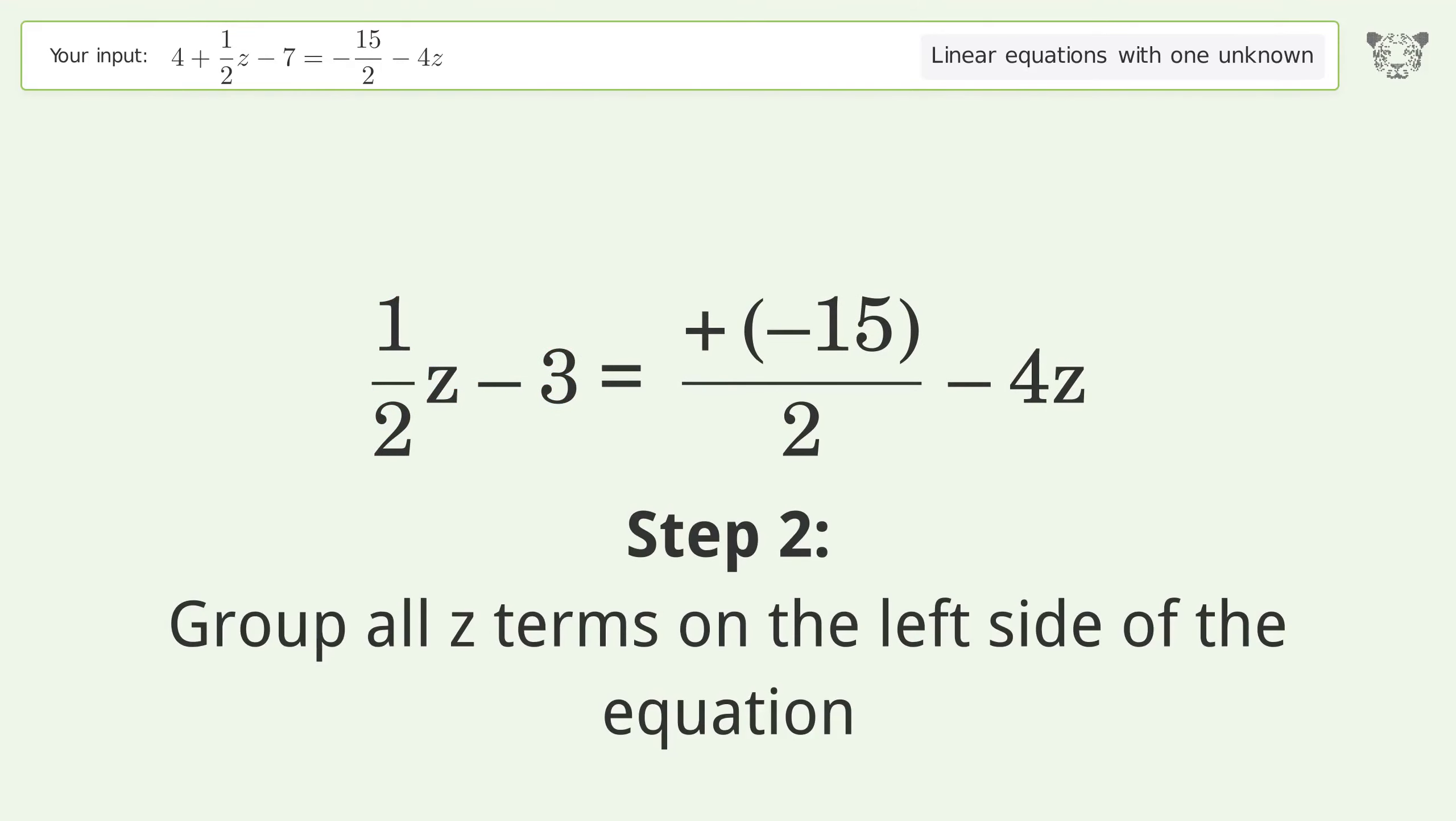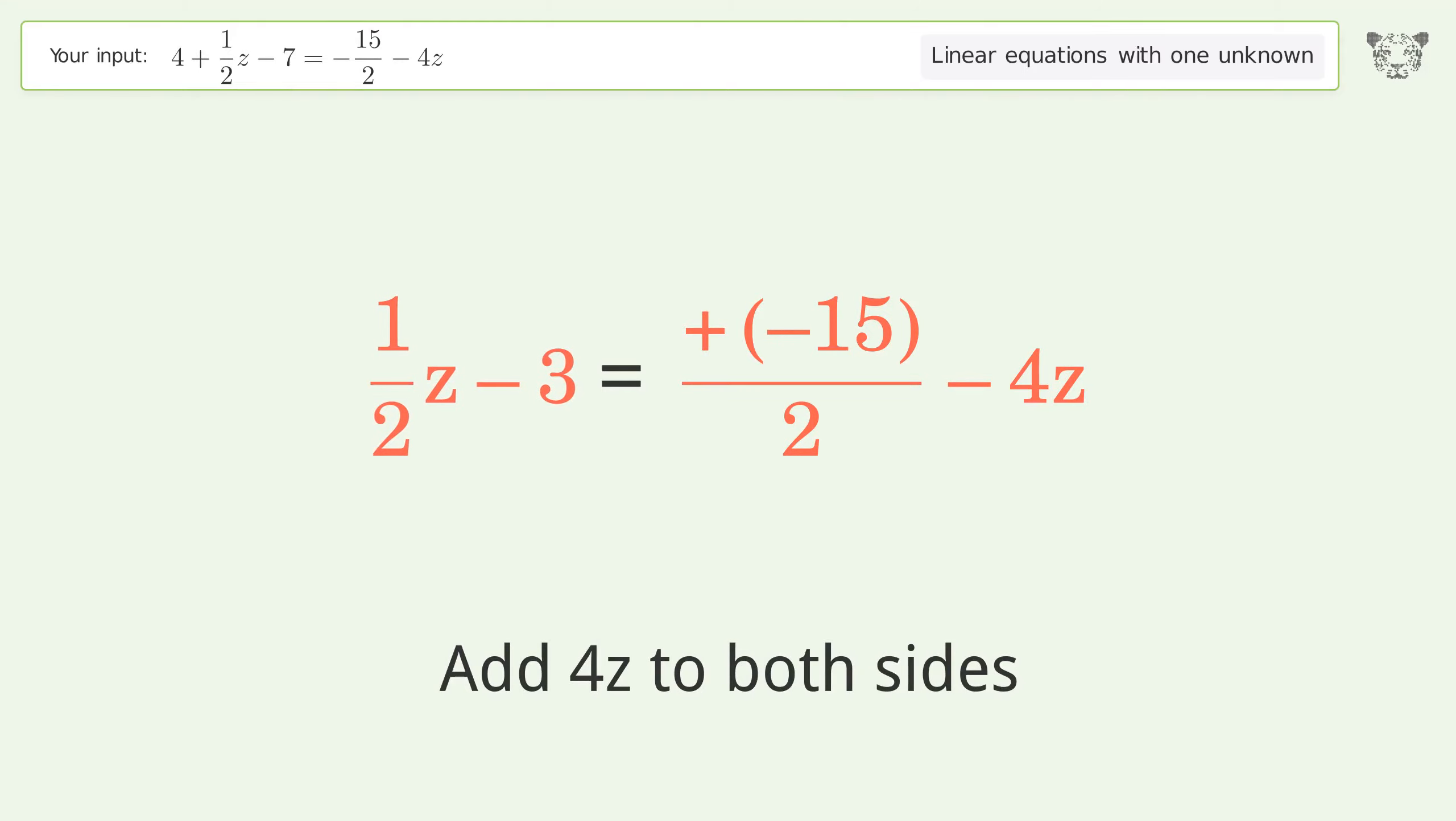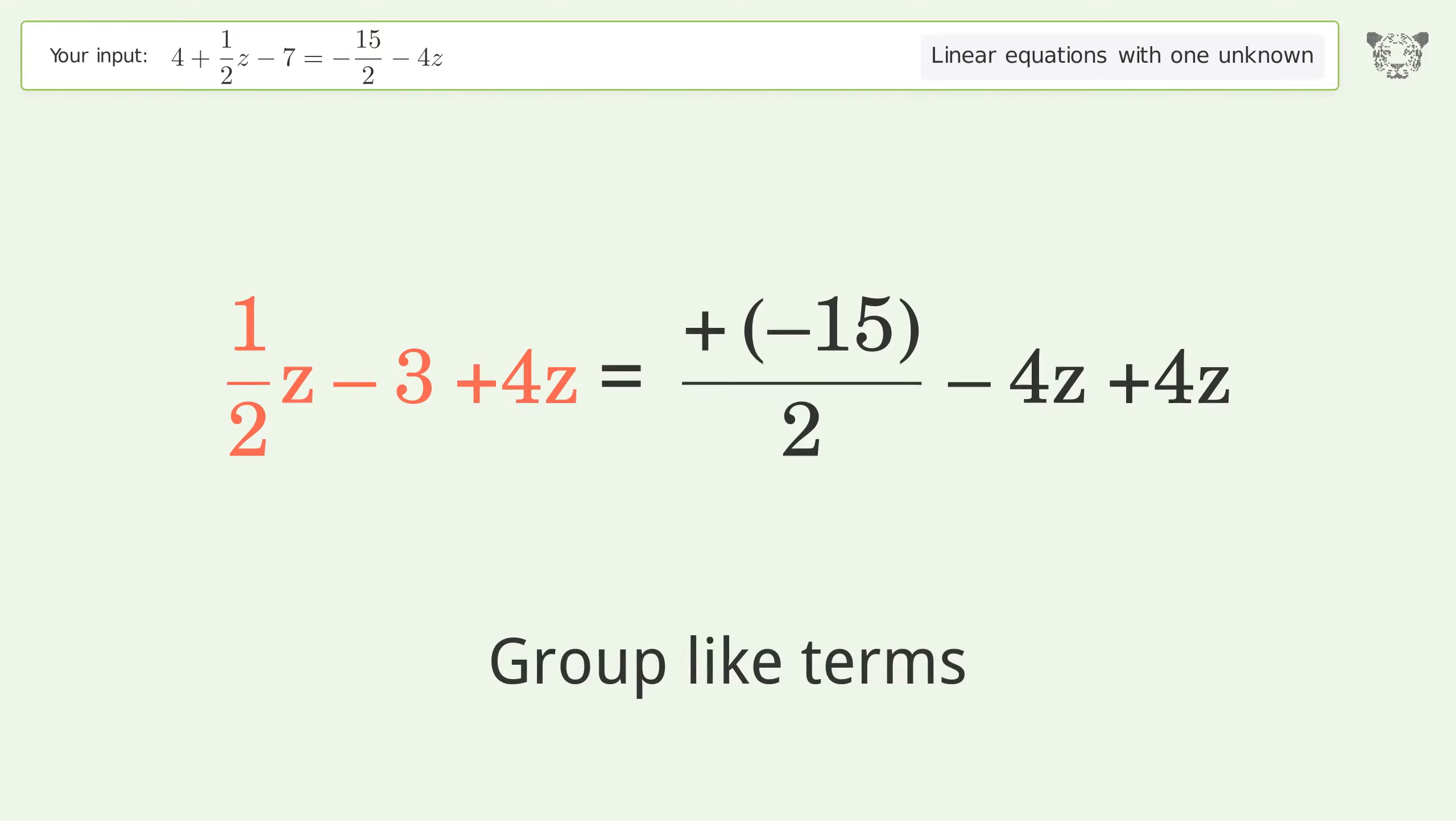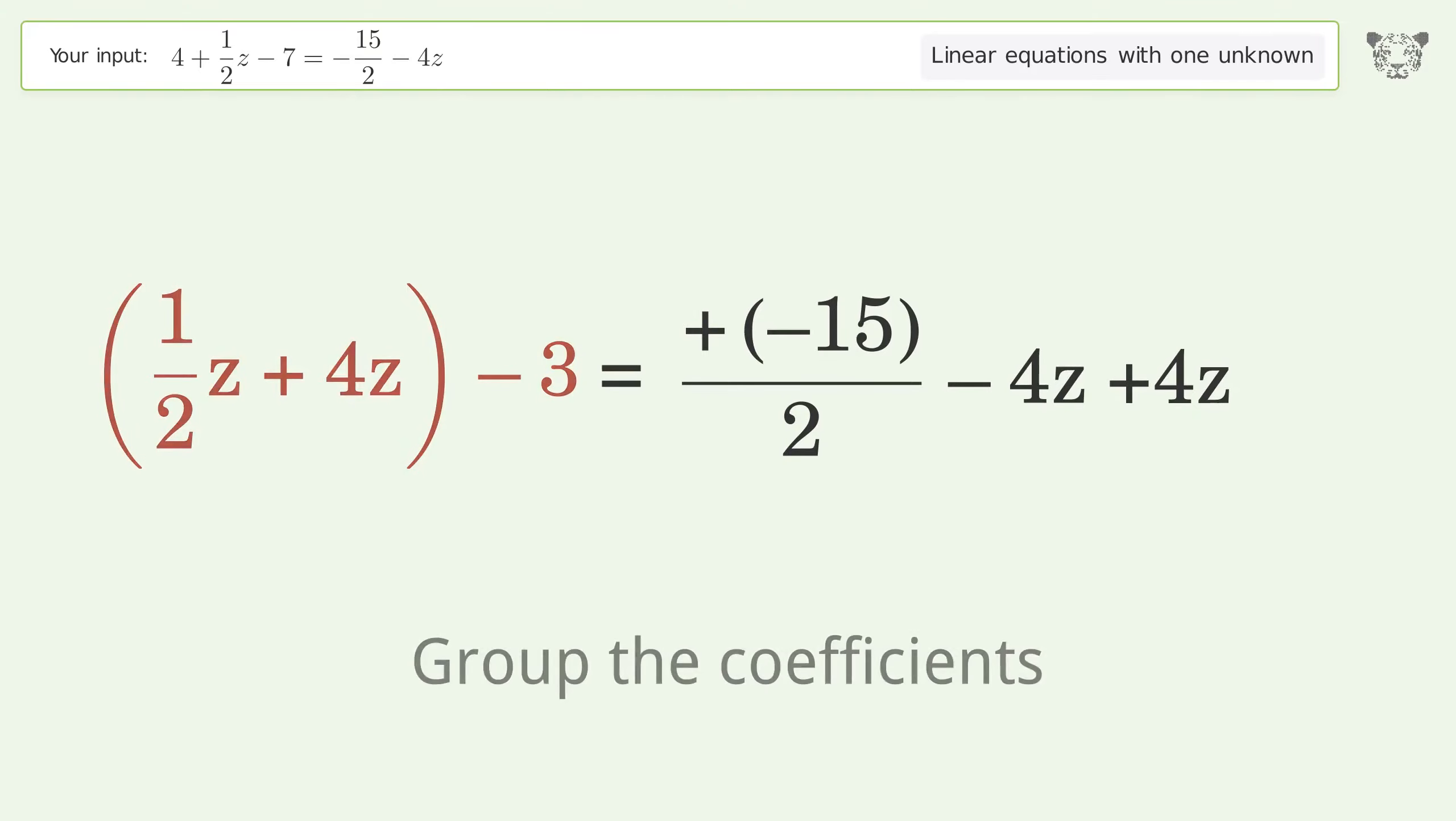Group all z terms on the left side of the equation. Add 4z to both sides. Group like terms. Group the coefficients.